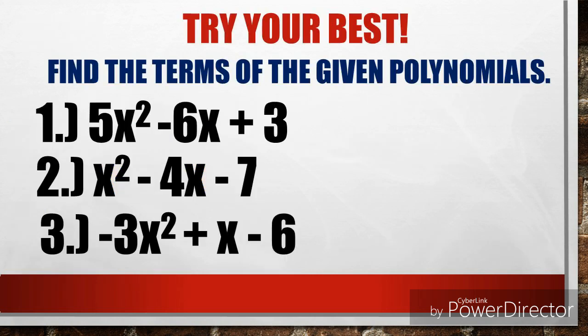In this given activity, you're going to identify what is the first, second, and third term. Find the terms of the given polynomials. Number 1: 5x squared minus 6x plus 3. Number 2: x squared minus 4x minus 7. And number 3: negative 3x squared plus x minus 6.